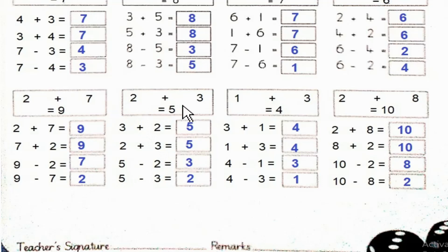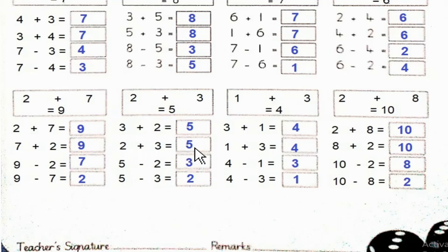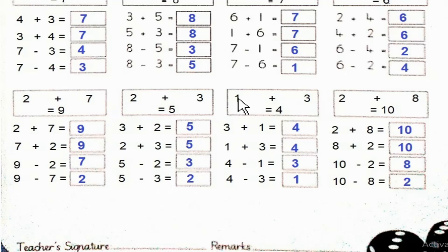2 plus 3 is equal to 5. 3 plus 2 is equal to 5. 5 minus 2 is equal to 3. 5 minus 3 is equal to 2.